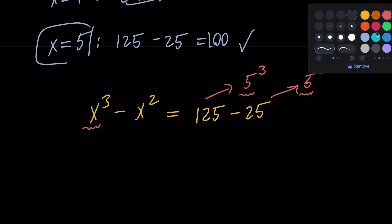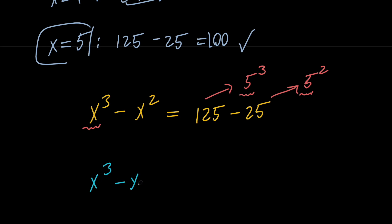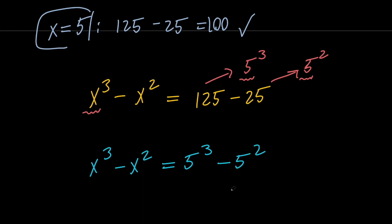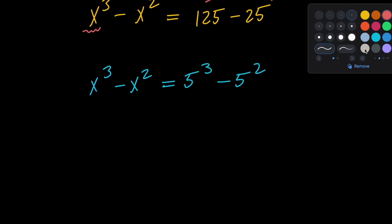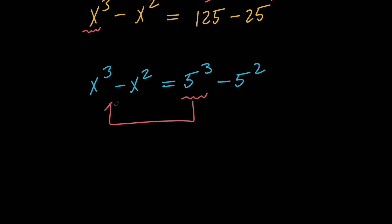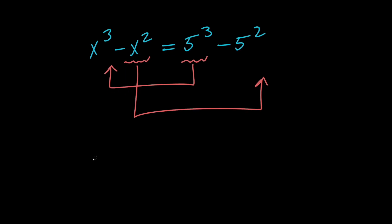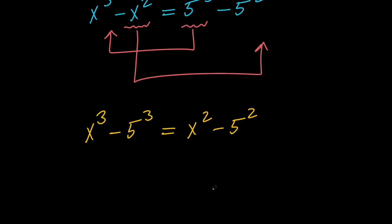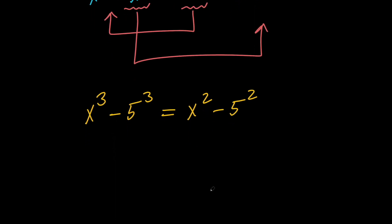So let me rewrite the problem. We have x cubed minus x squared equals 5 cubed minus 5 squared. Next, let's go ahead and move 5 cubed to the left hand side and move x squared to the right hand side. So we're going to have x cubed minus 5 cubed equals x squared minus 5 squared, which is really nice because on the left hand side we have a difference of cubes and on the right hand side we have a difference of squares.